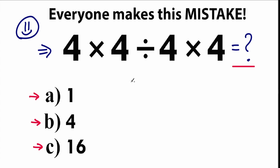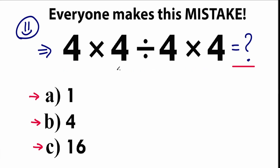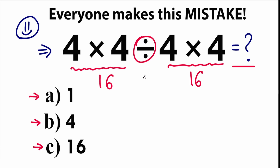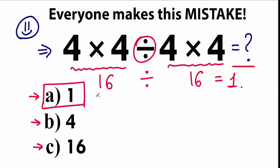It will be really interesting — it's a great test for everyone to test our school knowledge. So here's our question: 4 times 4 divided by 4 times 4. A lot of students might say, okay, let's go from left to right. We have 4 times 4 equal to 16 on the left, the same 4 times 4 on the right equal to 16, and the division in the middle gives us 16 divided by 16, which equals 1. A lot of students say option A is the correct answer.